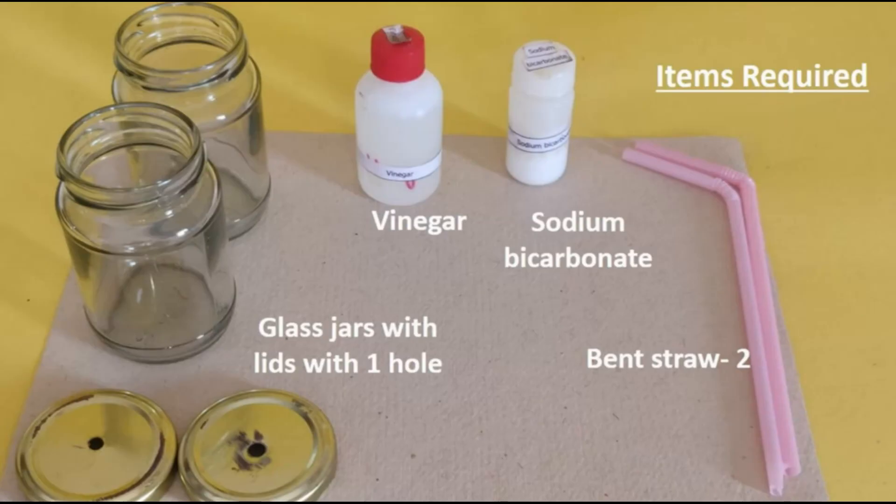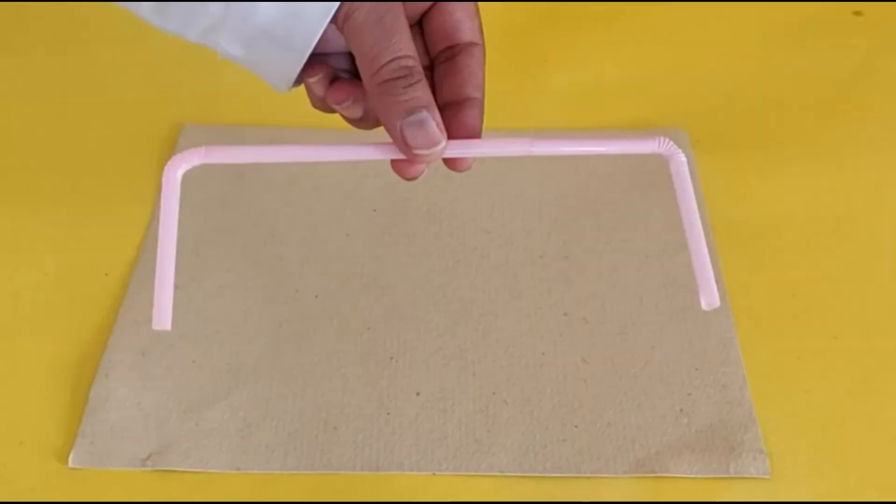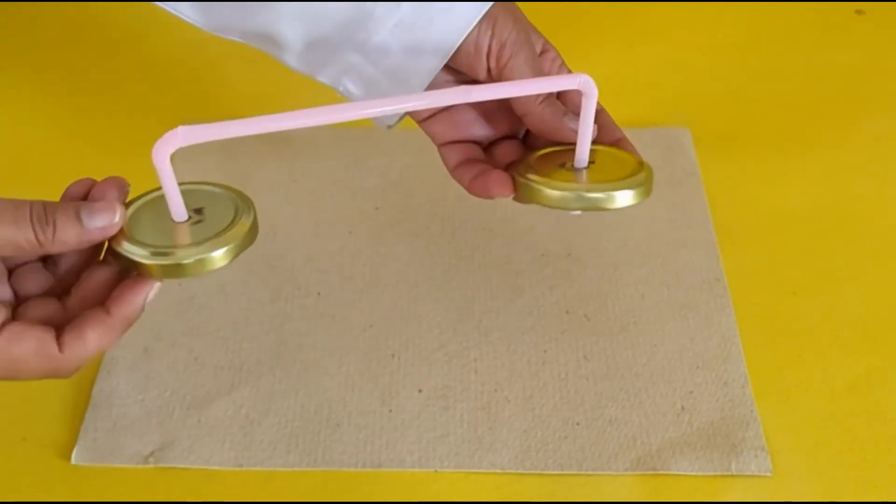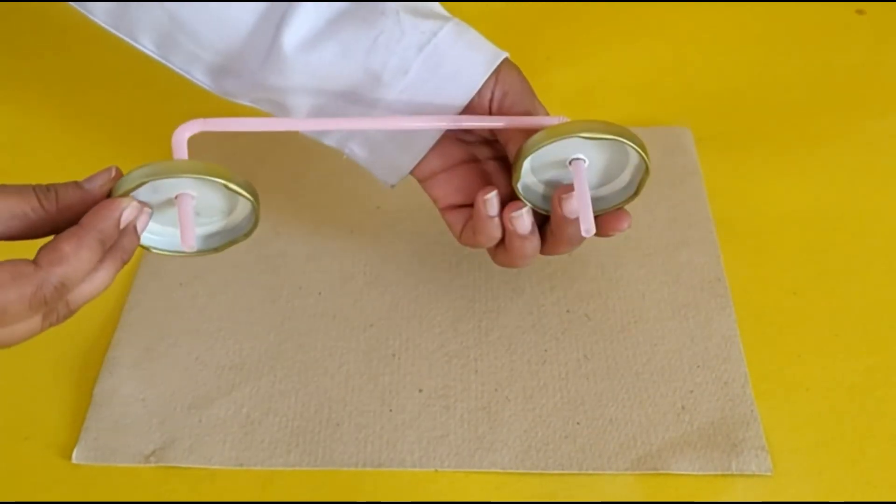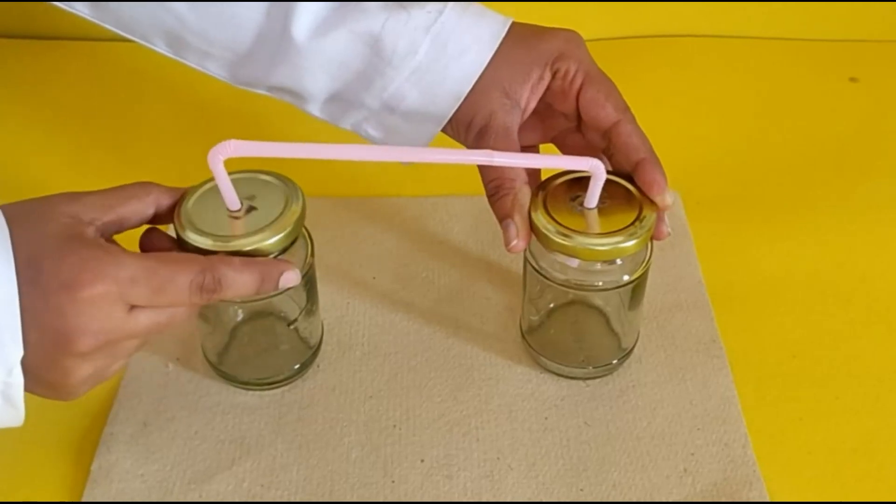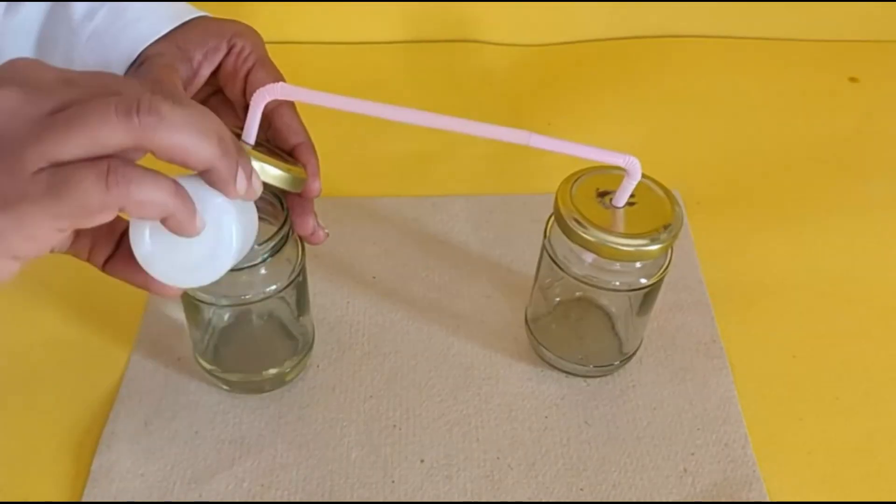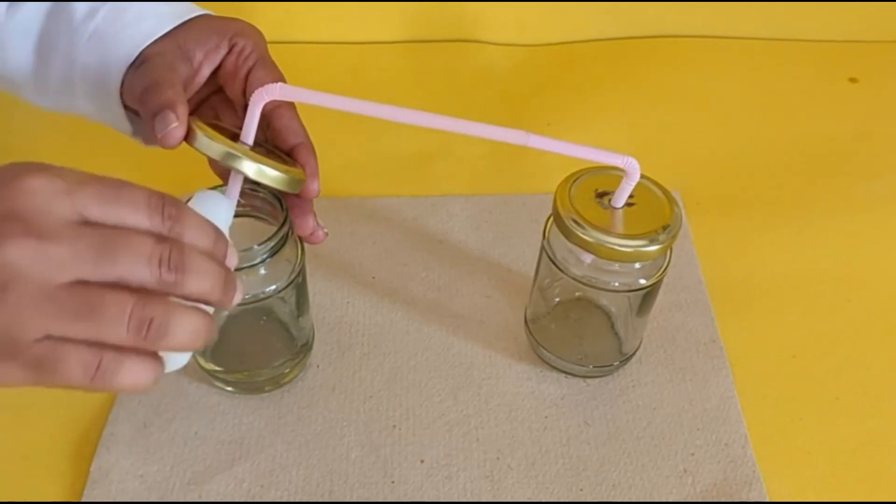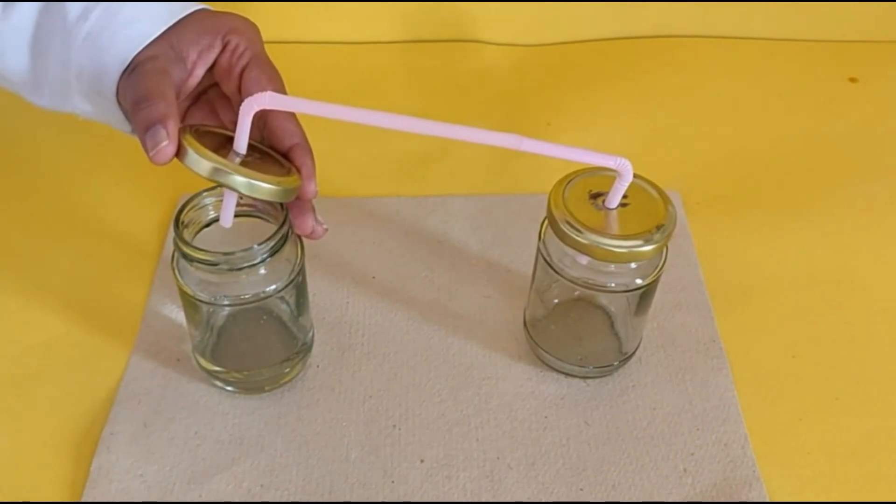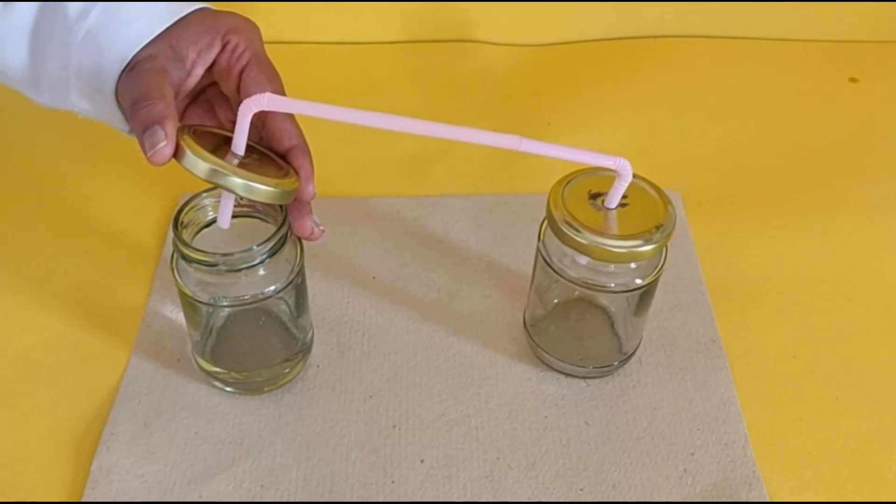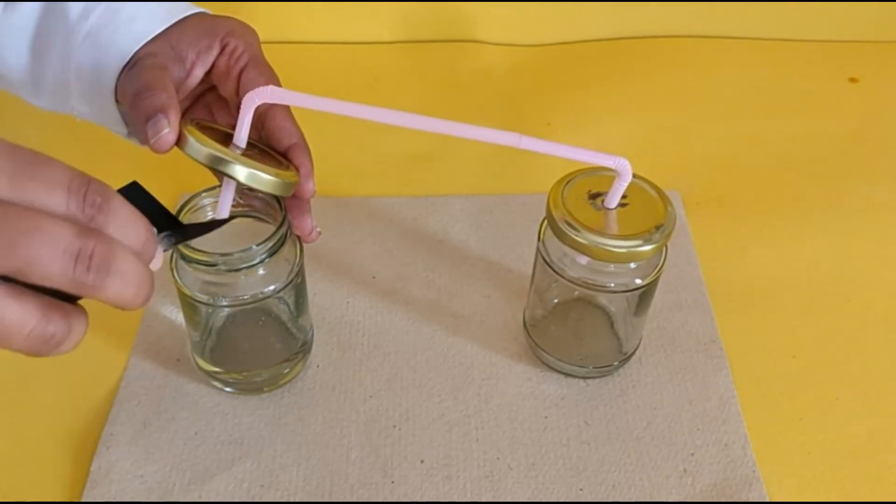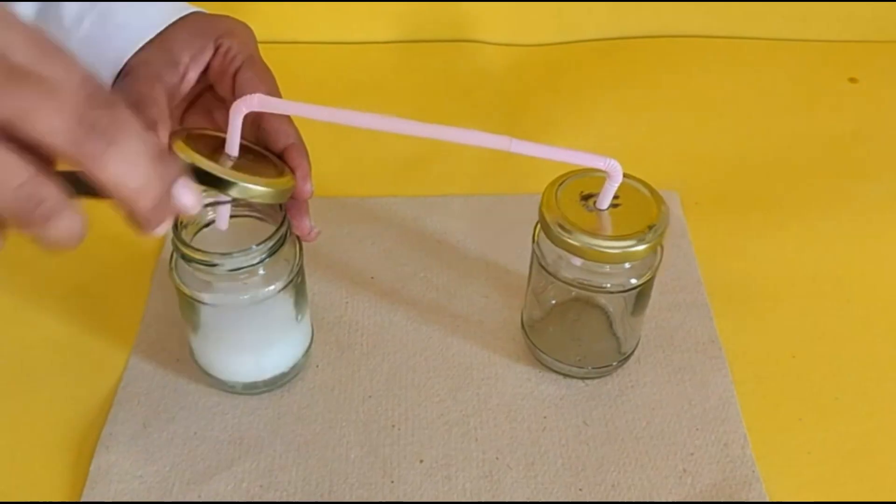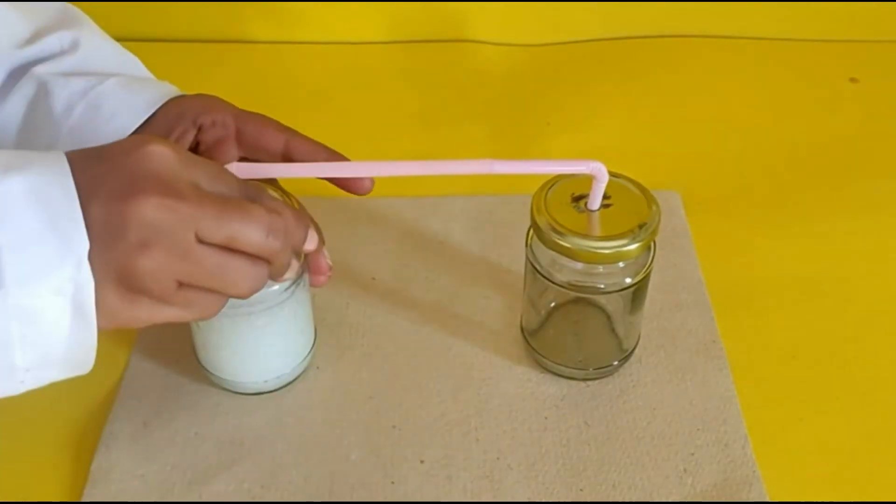After gathering these, we have to connect two straws in this way. Look here, we have to arrange like this and now pour vinegar in the jar. And after that, we have to add sodium bicarbonate and immediately close the lid of the jar.